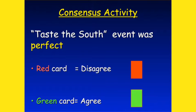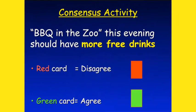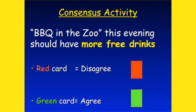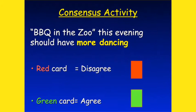Let's challenge you a little bit — inquiry. Barbecue in the zoo this evening should have more free drinks — red or green? So yesterday was not perfect; there is something we need more. Another question: barbecue in the zoo this evening should have more dancing.